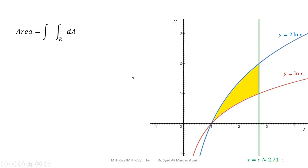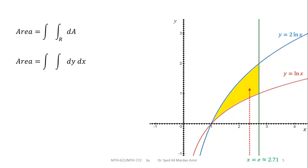To calculate the area, I will use y as the inner variable and x as the outer variable. To find the limits of the inner variable, I pass a vertical arrow through the region. This arrow enters the region at the boundary where y is equal to natural log of x and exits at the boundary where y is equal to 2 natural log of x. For the outer variable x, the region spans from x equal to 1 to x equal to e.